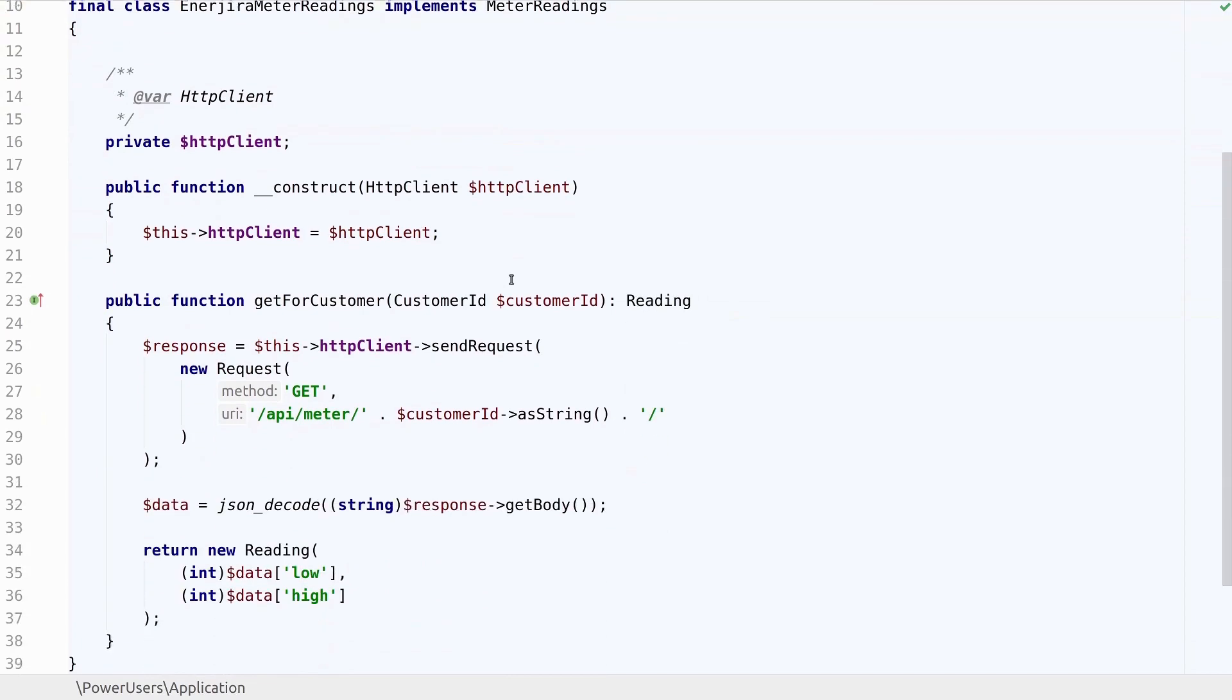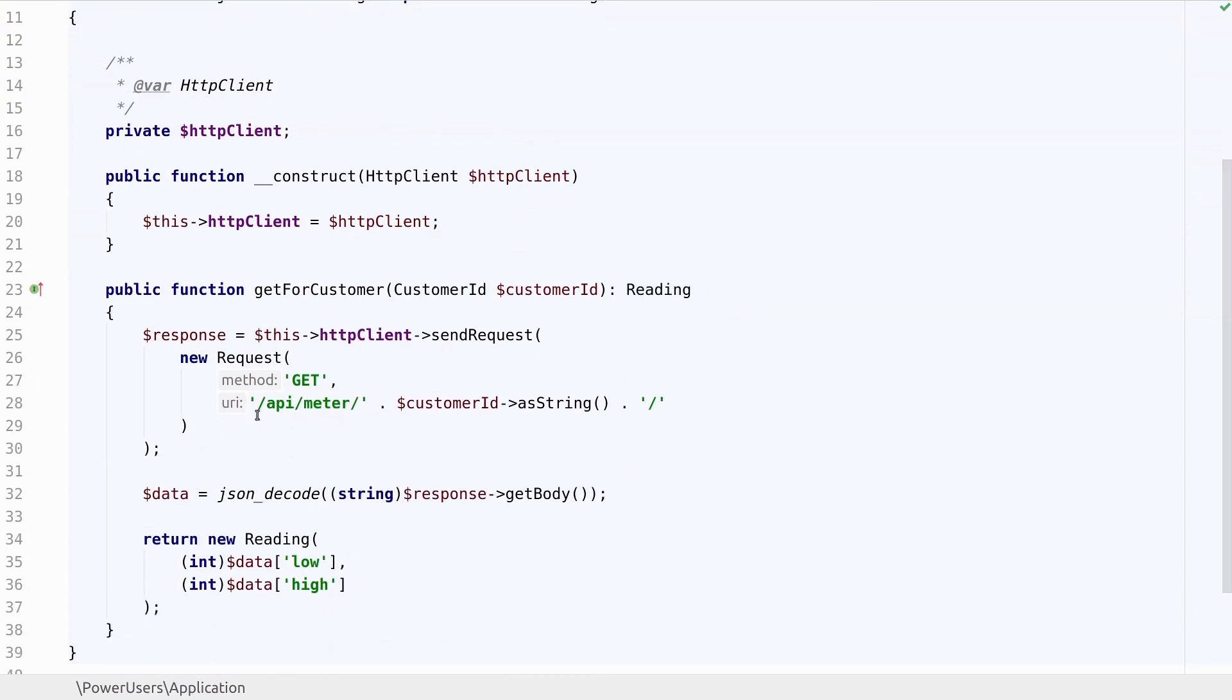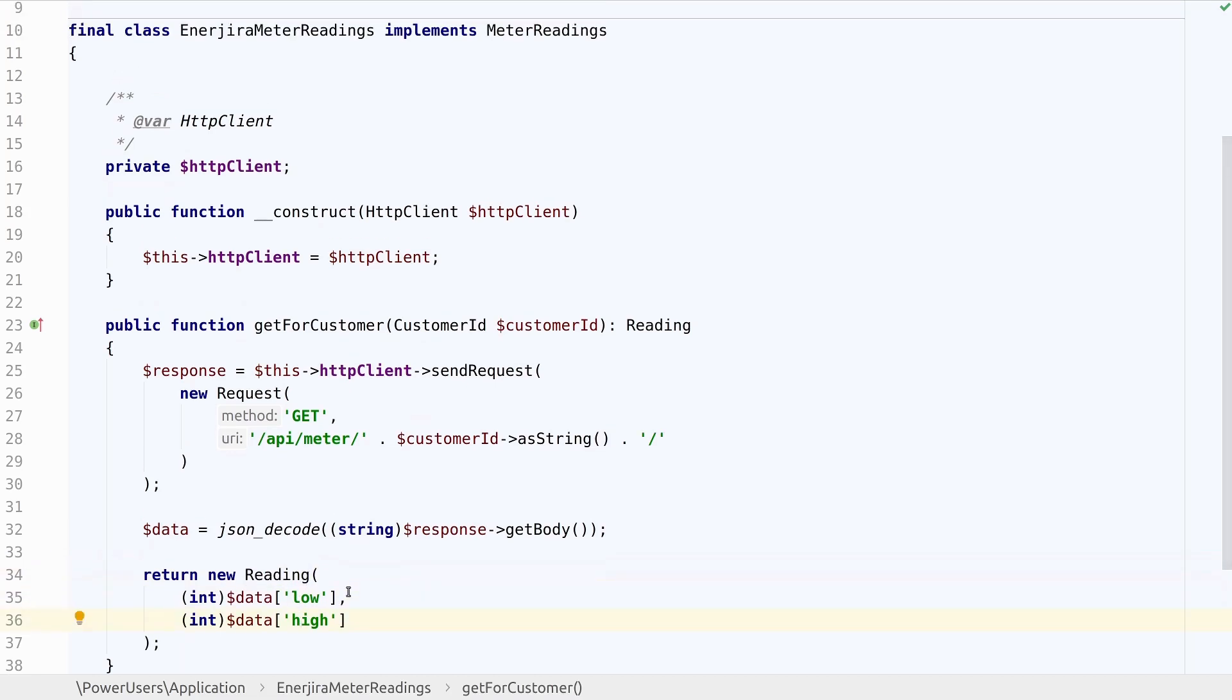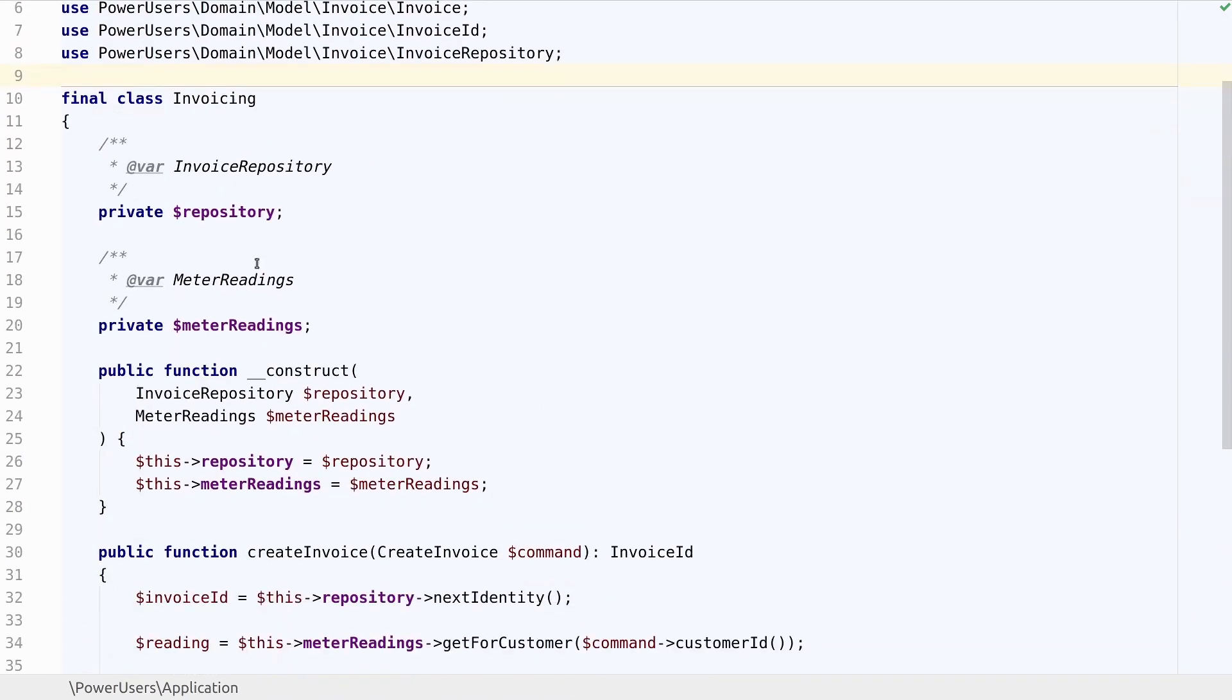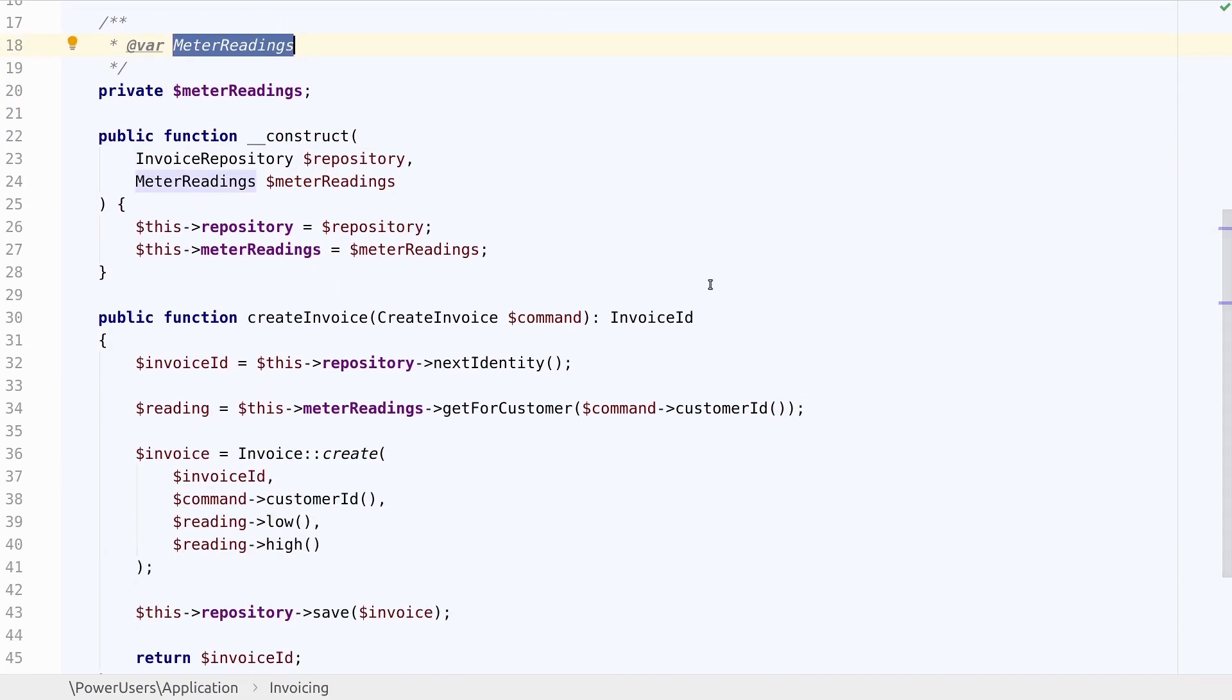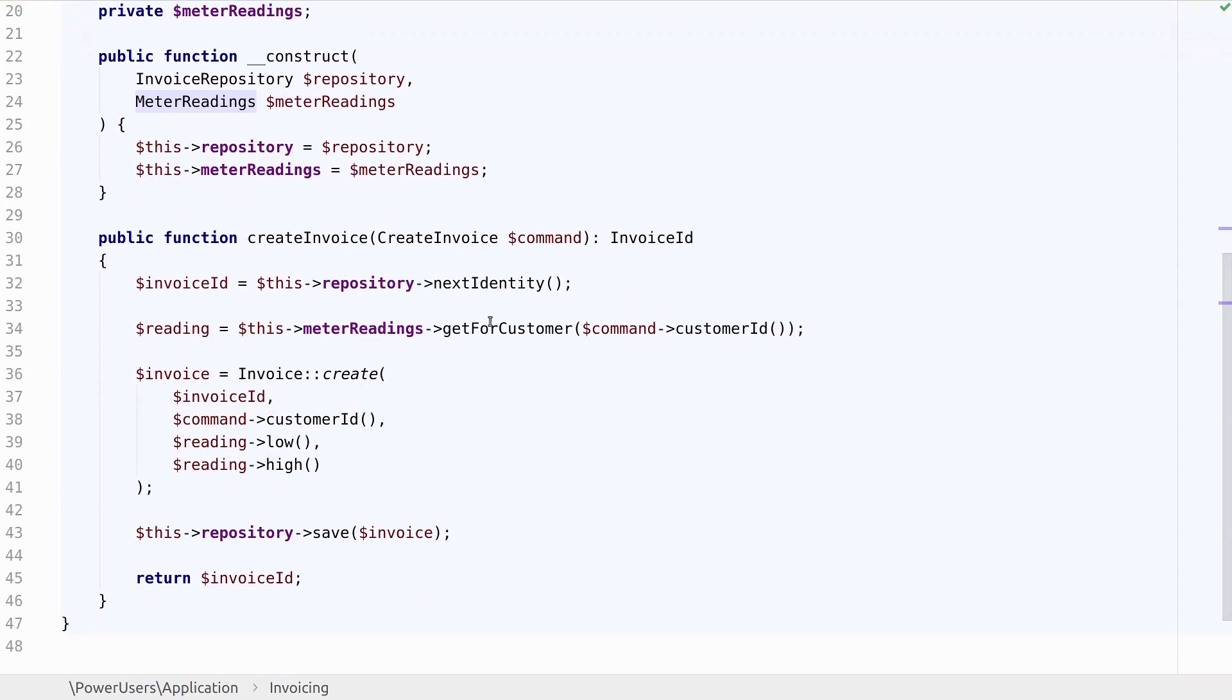We can easily copy any of the HTTP request code from the previous invoicing service. Everything stays the same, except at the end we return a reading object, which contains the low and high values. And inside the invoicing service, we get a meter reading service injected, instead of the HTTP client that we got before. And we can directly call it with our customer ID to get a reading object, which we can ask for the low and high readings.